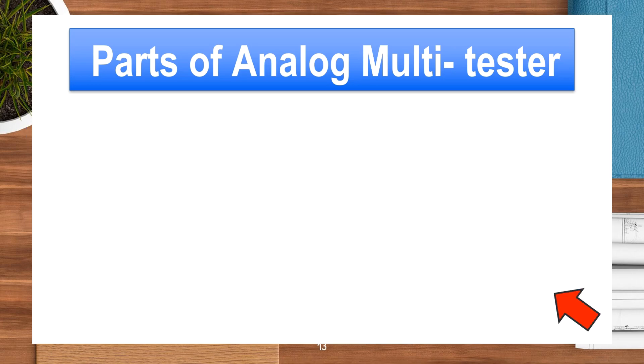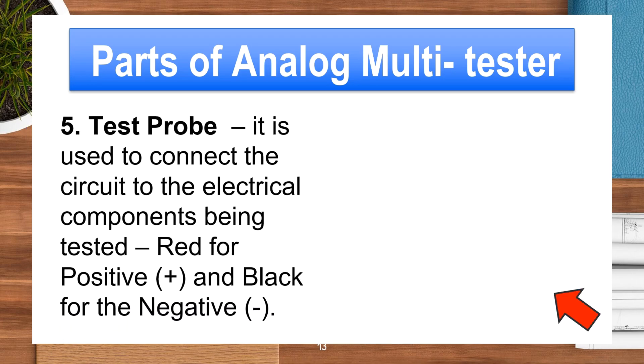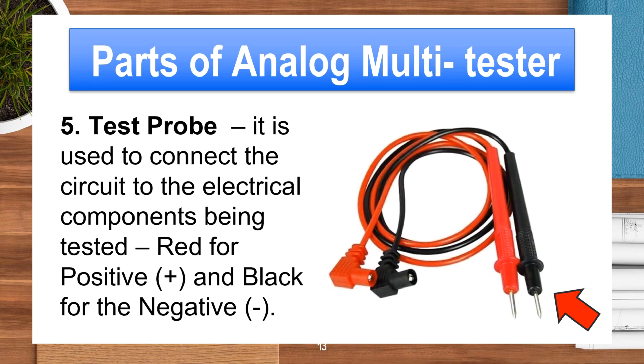Part 5 is the Test Probe. It is used to connect the circuit to the electrical components being tested. Red is for positive and black is for the negative.